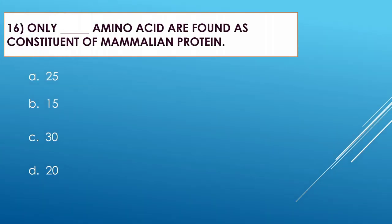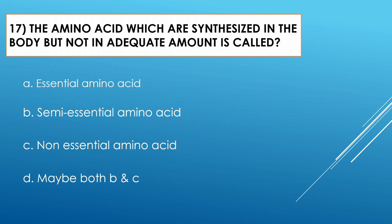Question number sixteen: Only how many amino acids are found as constituents of mammalian protein? Option A: 25. Option B: 15. Option C: 30. Option D: 20. The correct option is 20. Humans have 20 different forms of amino acids which make protein.